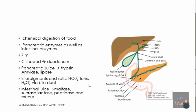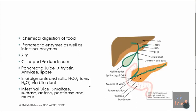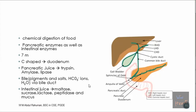If I ask you where the chemical digestion of food takes place mainly in the human body, what organ would you mention? The small intestine. The main mechanical process takes place in the stomach, and the main chemical digestion and absorption takes place in the small intestine. The C-shaped starting part is known as the duodenum.